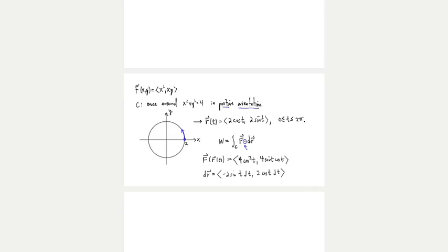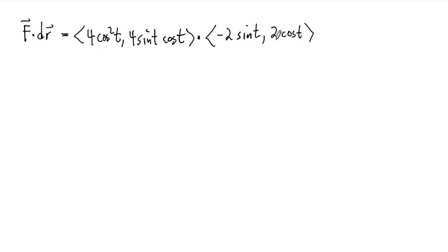So the dot product is going to be given by f dotted with dr. Let's remember what these were. We had 4 cosine squared t, 4 sine of t cosine of t, and then dr was the vector function that was negative 2 sine of t, positive 2 cosine of t. There was a dt in each of these. I'm going to factor that dt out. And then do the dot product here. So we'll have a differential in terms of dt, which will be a function times dt. So as we multiply this out, we get negative 8 cosine squared t times sine of t plus 8 sine of t cosine squared t all times dt.